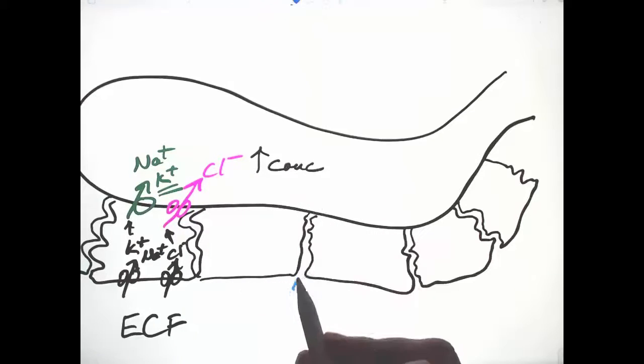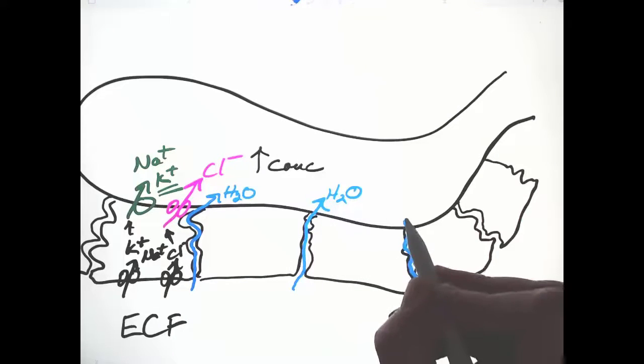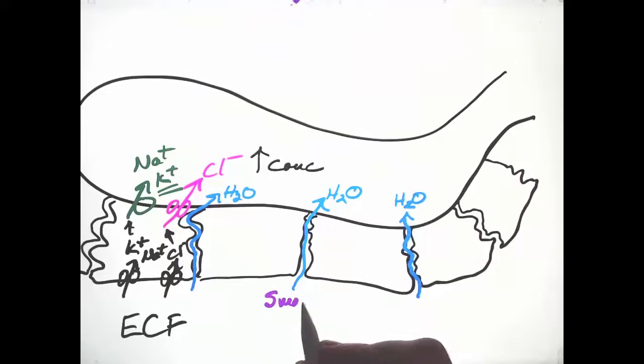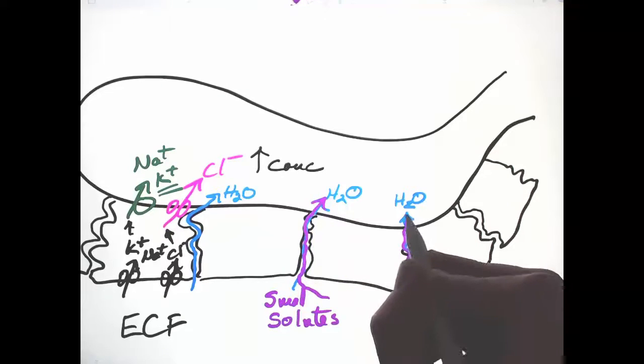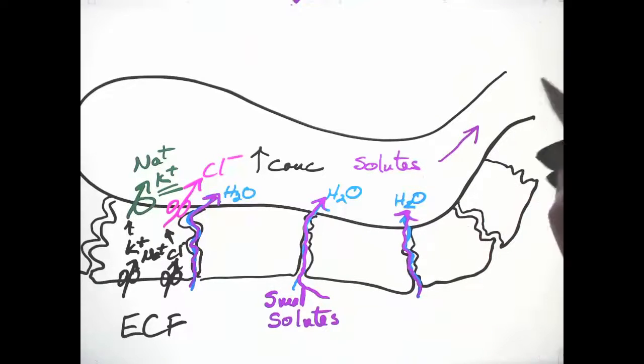Therefore, water moves in through paracellular channels, moving into this area of high concentration, and the water carries with it small solutes that include wastes and valuable molecules. The combination moves down into the gut.